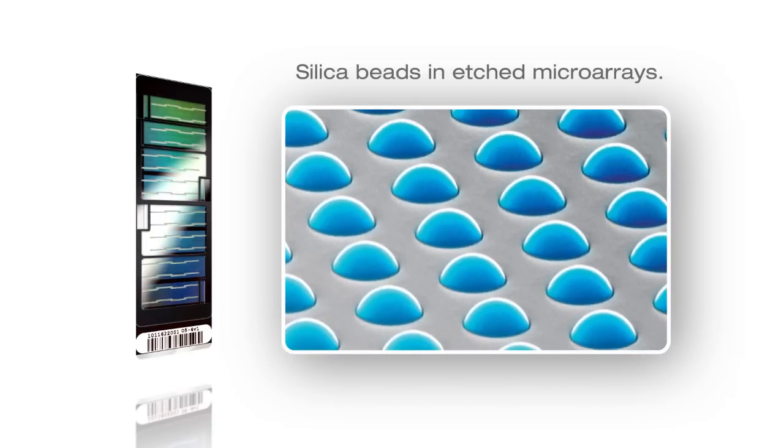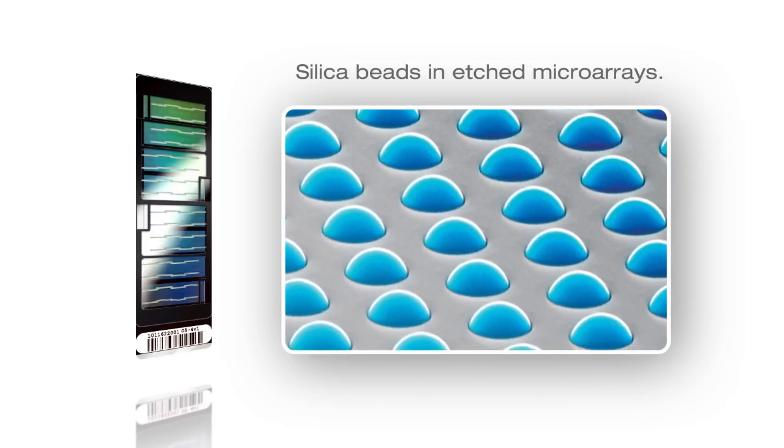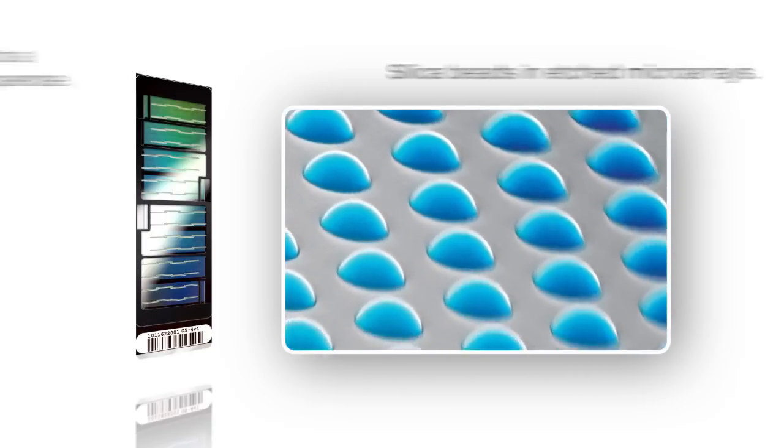These tiny silica beads are housed in carefully etched microwells. The beads are coated with multiple copies of an oligonucleotide probe that targets a specific locus in the genome. As DNA fragments pass over the BeadChip, each probe will bind to a complementary sequence in the sample DNA.